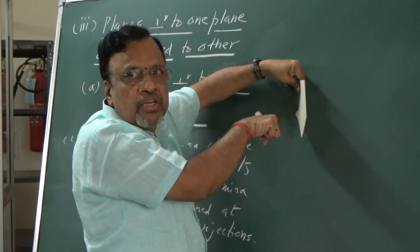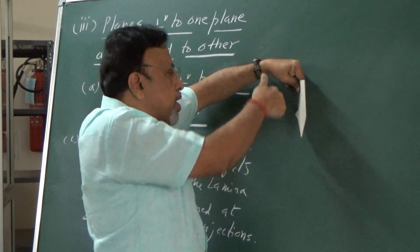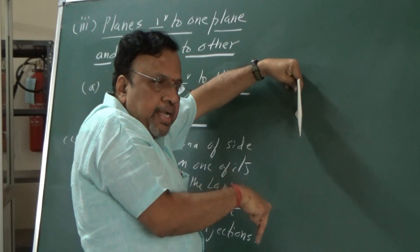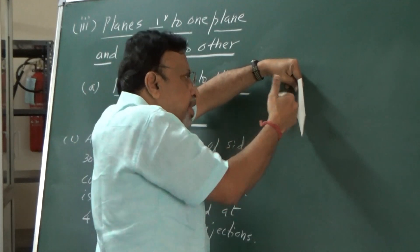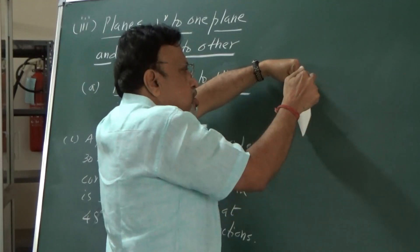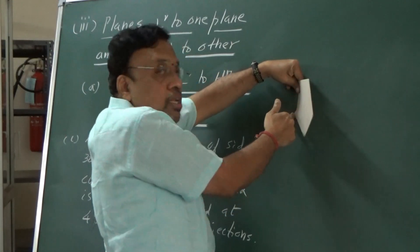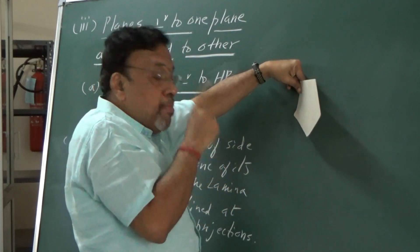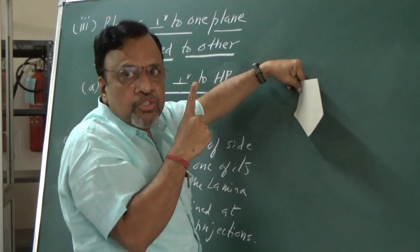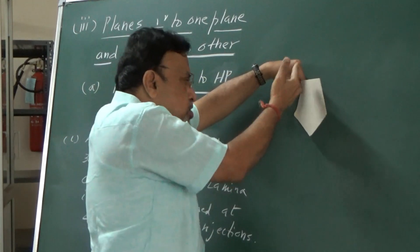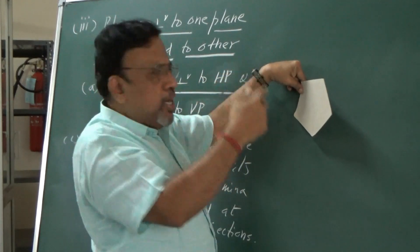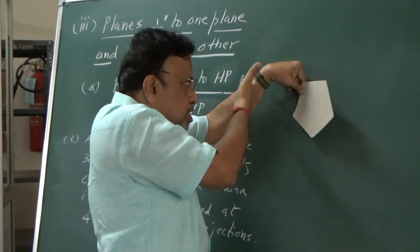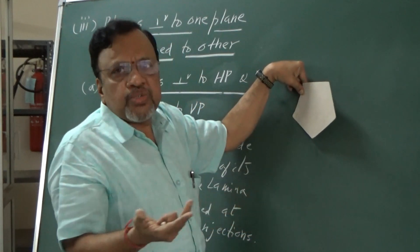Remember, as I told you in the case of lines — the locus law. Obviously, instead of just two ends, we have many ends here. Every end is a locus line, and all those locus lines must be parallel to the XY line.